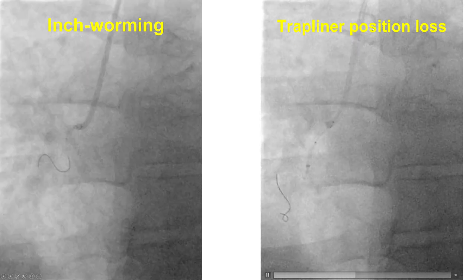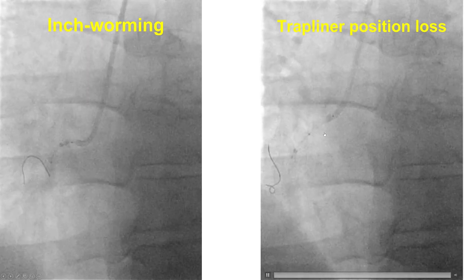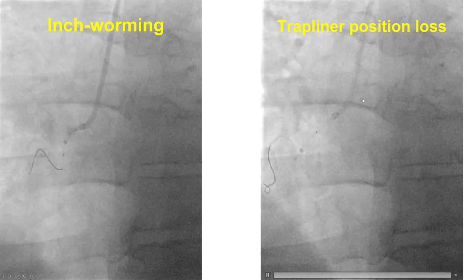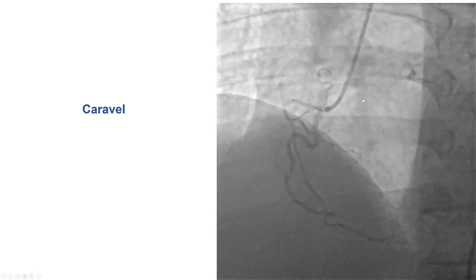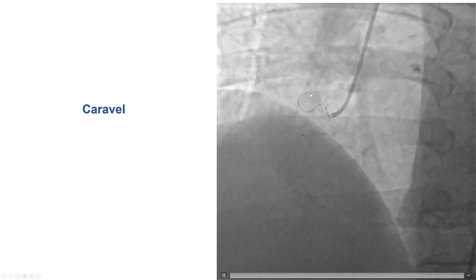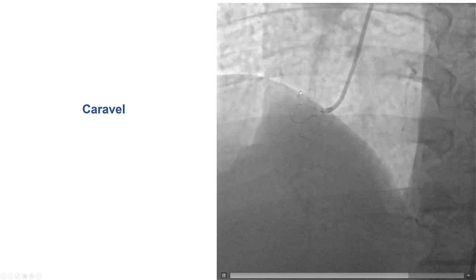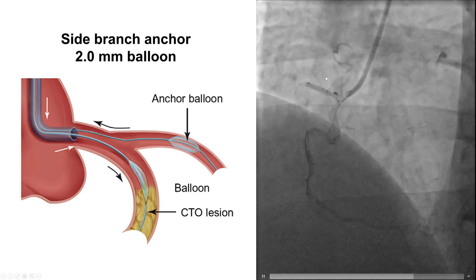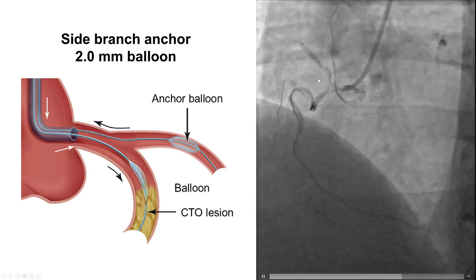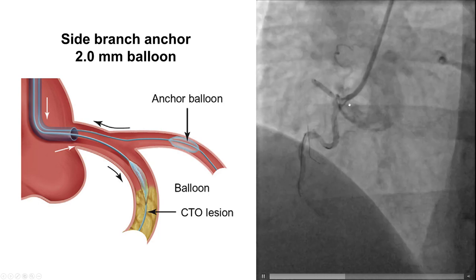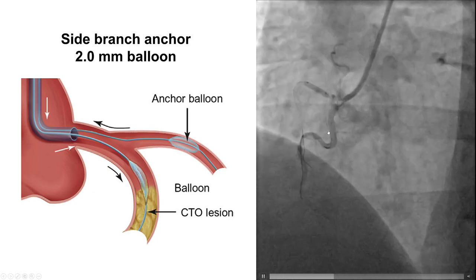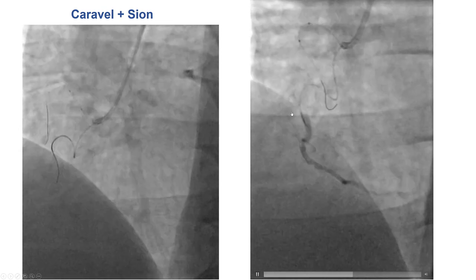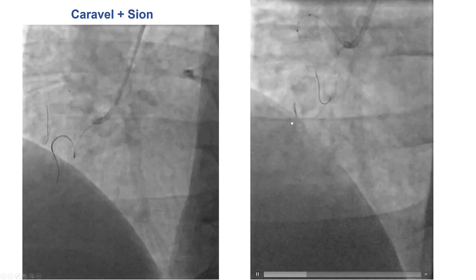Having the Trapliner with the balloon proximally also facilitated inserting micro catheters. However, after a brief wiring attempt, the guide extension and guide position were lost. We decided to change plans and use a side branch anchoring technique. This used a JR4 with a wire inserted into the large acute marginal branch, and then a 2.0 mm balloon inflated in this branch to provide support to the guide catheter. We were then able to advance a Caravelle micro catheter into the proximal and mid-right coronary artery, delivered just proximal to the lesion, providing good support.